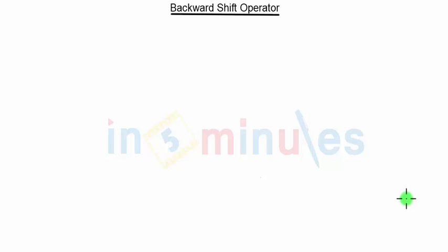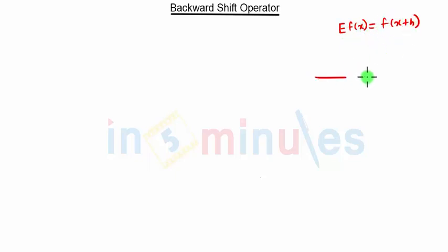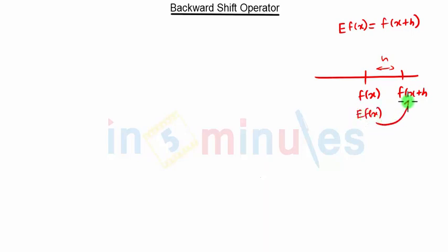Hello everyone, welcome to 'In 5 Minutes'. In this video we are going to see the next operator known as the backward shift operator. Before that, we know the forward shift operator: E of f(x) is nothing but the next term, that is f(x+h), where the interval is h. So E of f(x) is the next term f(x+h) — this is the forward shift operator.